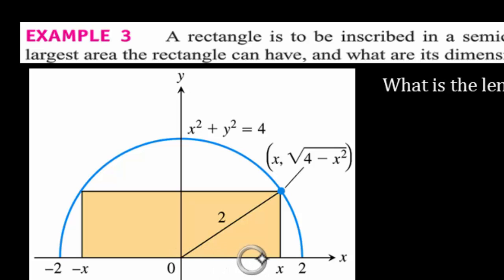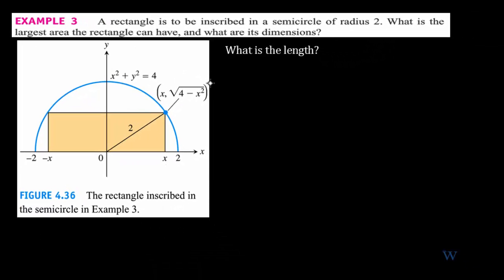If you let x be the length from 0 to x, then this other length is the y value — the y value of the semicircle. The equation of a semicircle is x² + y² = 4. Solving for y gives plus or minus the square root of 4 minus x², but because it's a semicircle, we do not include the negative. So this is x and that's y.